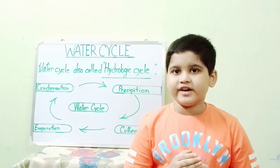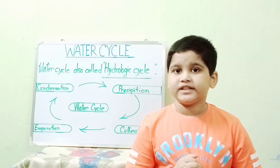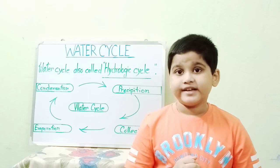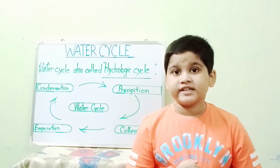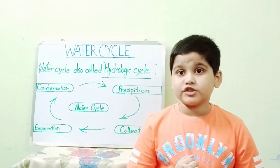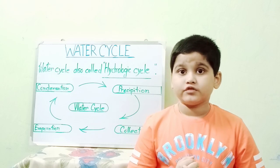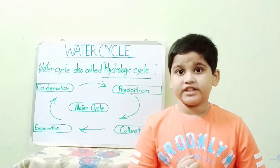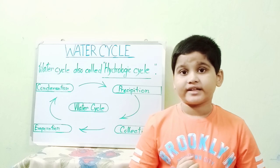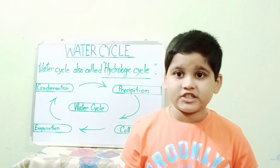Number 4: Collection. This is when water falls from the clouds as rain, snow, hail, or sleet and collects in the oceans, rivers, lakes, and streams. Most will soak into the ground and will collect as underground water. This is called collection.